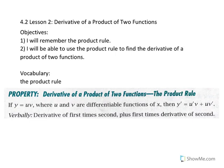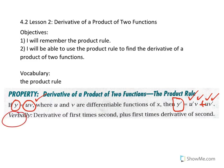So what is the product rule? If you have a product of two differentiable functions u and v, y represents the product u times v. Then y prime can be found by finding the derivative of the first function and multiplying it by the second function, and adding to that the first function multiplied by the derivative of the second function. Verbally: find the derivative of the first, multiply it by the second, and add to that the first function multiplied by the derivative of the second.